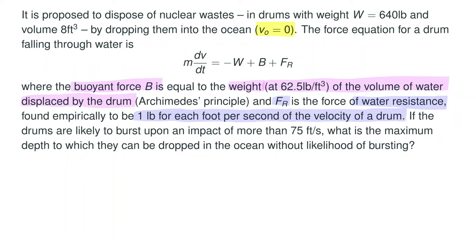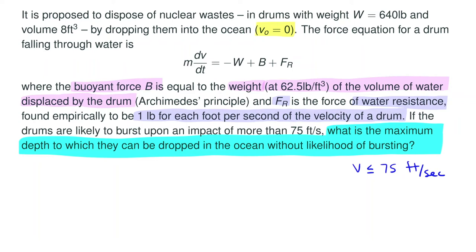The water weighs 62.5 pounds per cubic foot, and the drums are 8 cubic feet. F_r is 1 pound for each foot per second of velocity. If the drums are likely to burst upon impact of more than 75 feet per second, what is the maximum depth they can be dropped without bursting? The mass equals force divided by acceleration: weight 640 divided by gravity 32, giving mass equals 20.